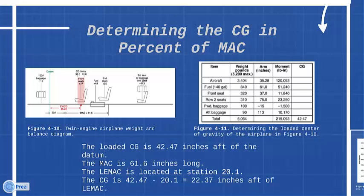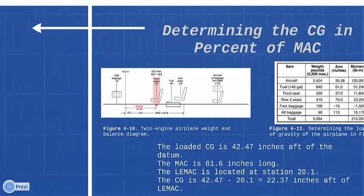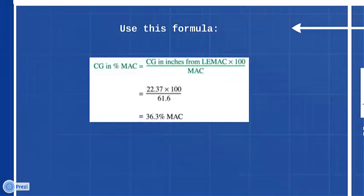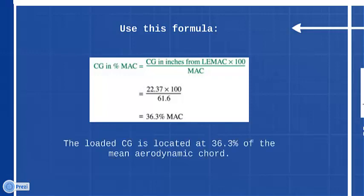Use this formula: CG in percent MAC equals CG in inches from LEMAC times 100, all over MAC. Substitute the values: 22.37 times 100, all over 61.6. The answer is 36.3% MAC. The loaded CG is located at 36.3% of the mean aerodynamic chord.